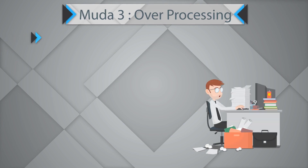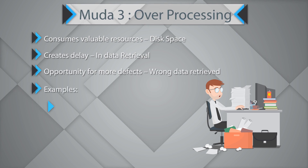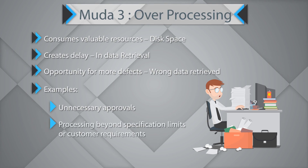The third waste is overprocessing. It consumes valuable resources such as disk space, creates delays in data retrieval, and provides opportunities for more defects. Simple examples include unnecessary approval processes and processing beyond the specification limit or customer requirement. You should eliminate excess work.